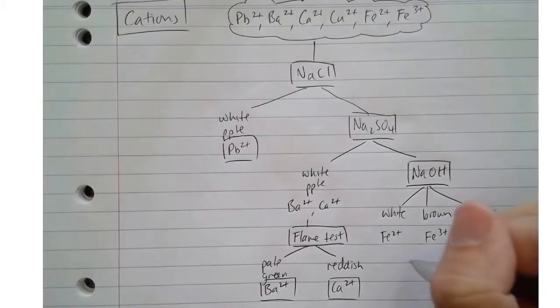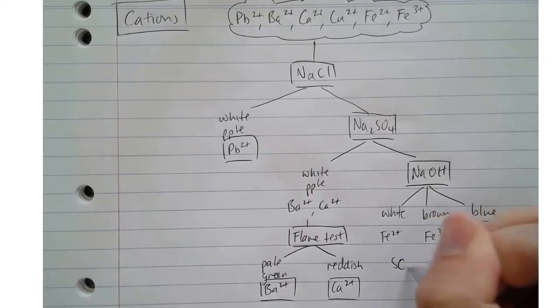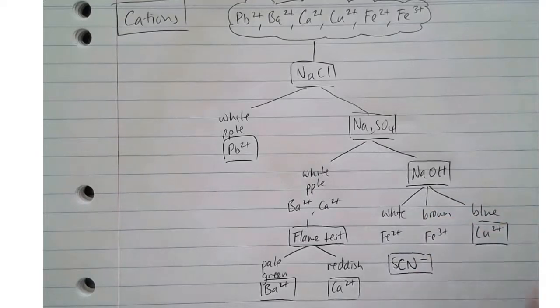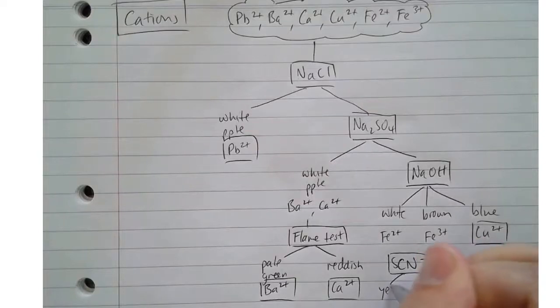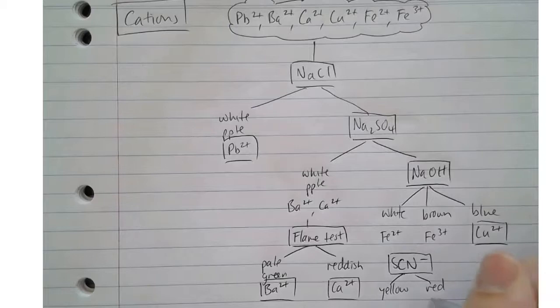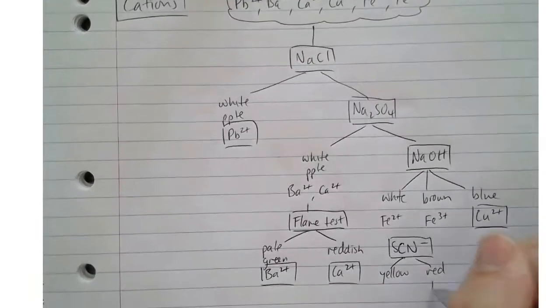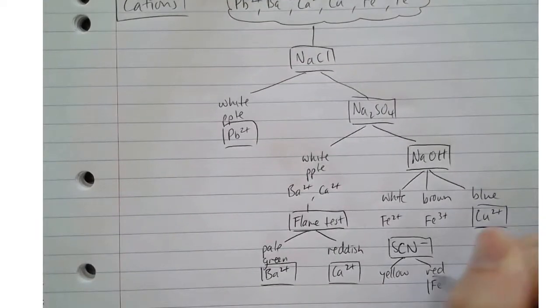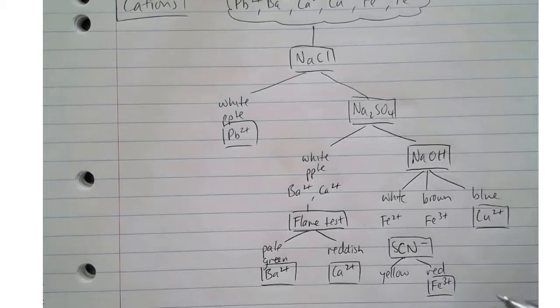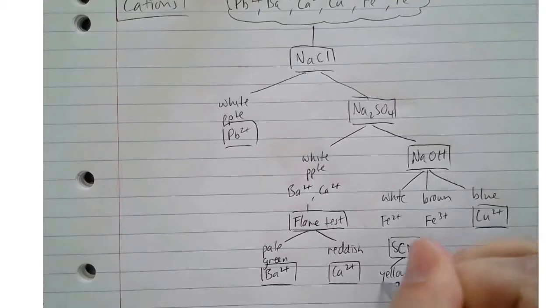So what we can do to further discriminate these two is add a sample of thiocyanate. We get a really bright red colour with Fe3+, very distinctive, it almost looks like blood, and then if it remains yellow, it's Fe2+.